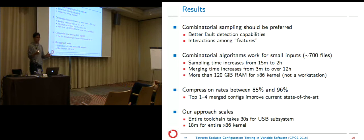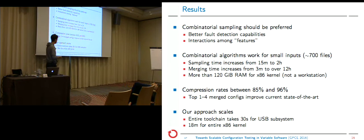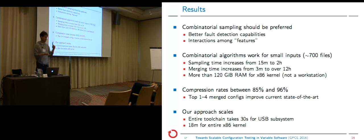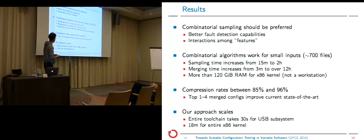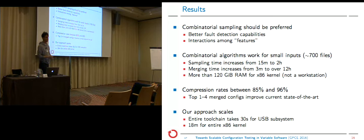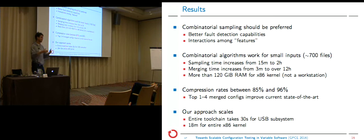Our approach scales — or can scale — depending on the algorithms chosen. The entire tool chain applied to the USB subsystem, including extracting a variability model, generating batch files, sampling source files, and merging configurations, took 30 seconds in total. Applied to the entire X86 kernel, it's around 18 minutes. We can make it faster by implementing an incremental infrastructure.